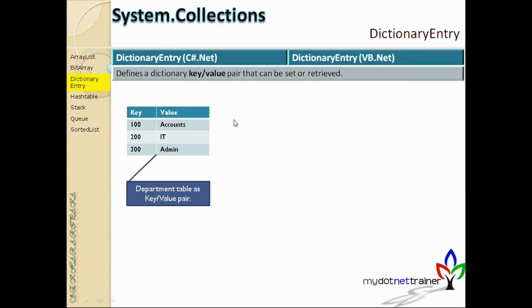DictionaryEntry is a practical usage example. It's a key-value pair structure with just two properties: Key and Value. We covered the Dictionary class in the previous session, which takes a key-value pair. DictionaryEntry is a structure that holds a key and value and will be very useful when we talk about HashTable.